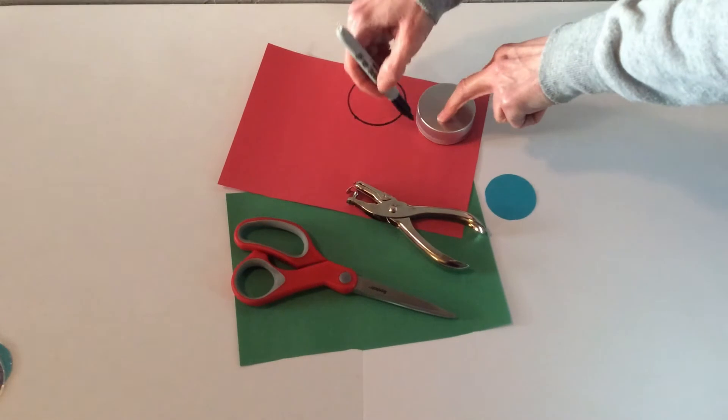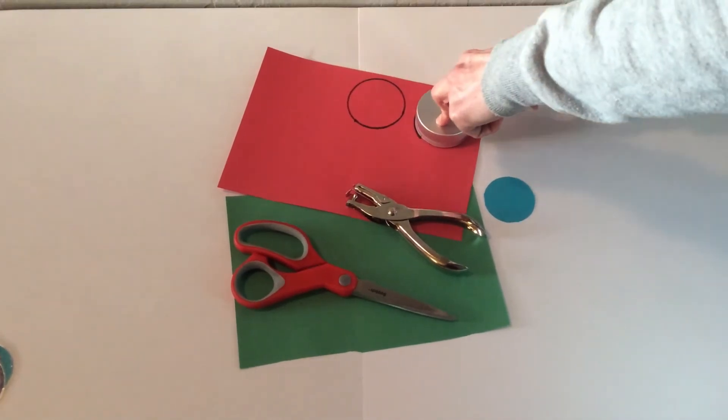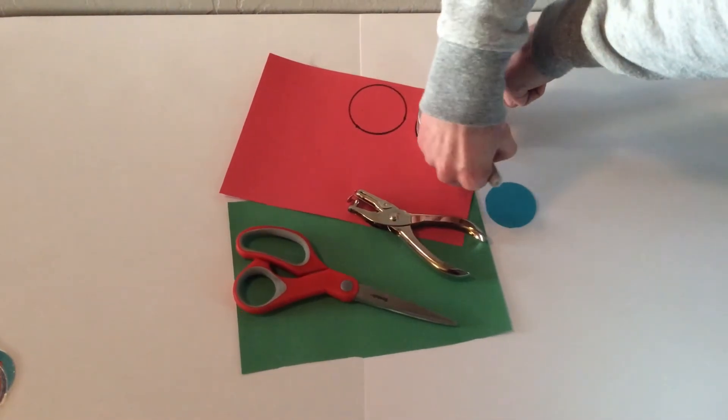If you want to make your own buttons, find something round and trace around it, and cut it out with scissors.